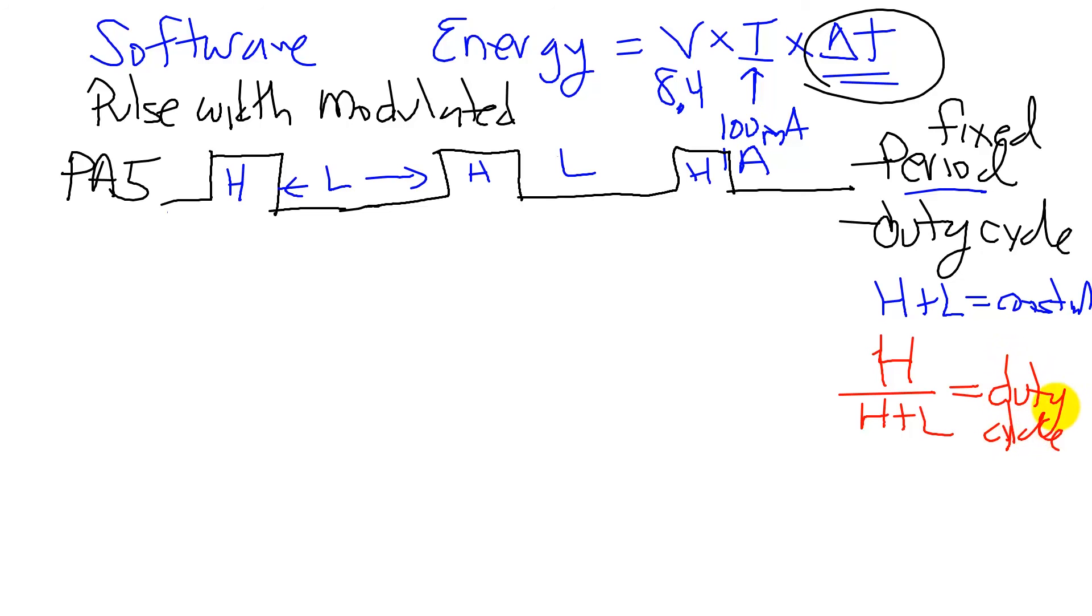And I'm going to control the duty cycle by having H over H plus L vary. And so the microcontroller can make the motor spin faster by increasing the duty cycle or even faster.